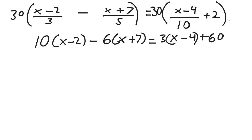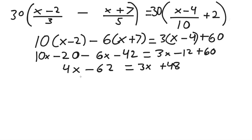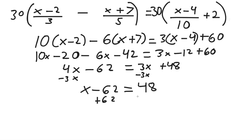After removing the fractions, we have 10 times the quantity x minus 2, minus 6x plus 7, equals 3 times the quantity x minus 4, plus 60. Step 2 is remove all parentheses by distributing, giving us 10x minus 20 minus 6x minus 42 equals 3x minus 12 plus 60. Combining like terms: 4x minus 62 equals 3x plus 48. Step 4 — subtract 3x from both sides — then add 62, and x equals 110.